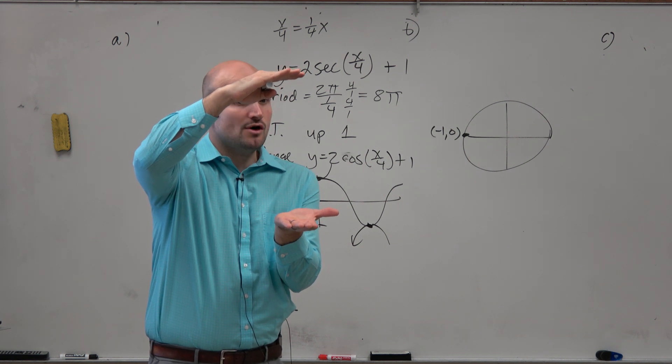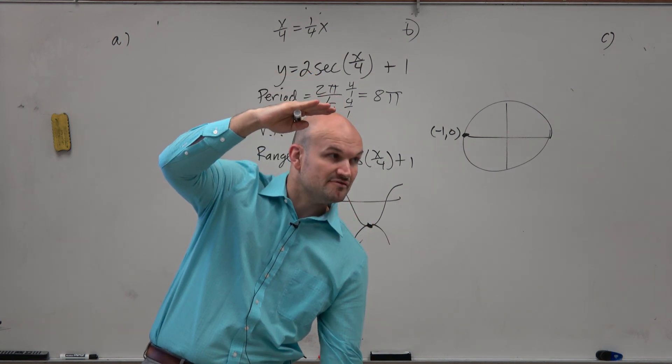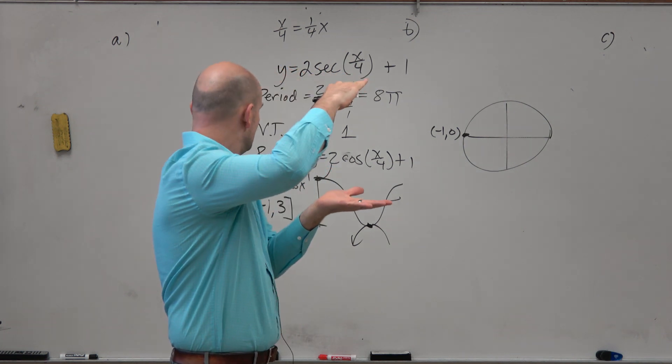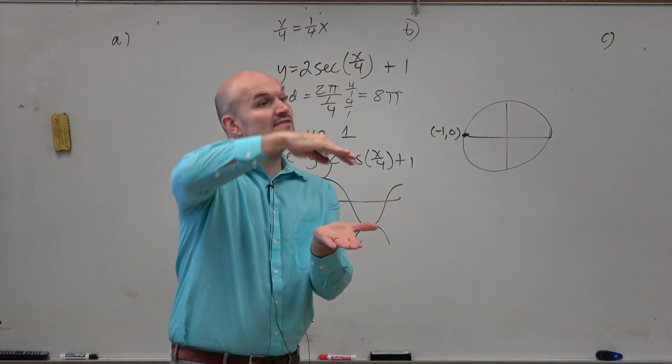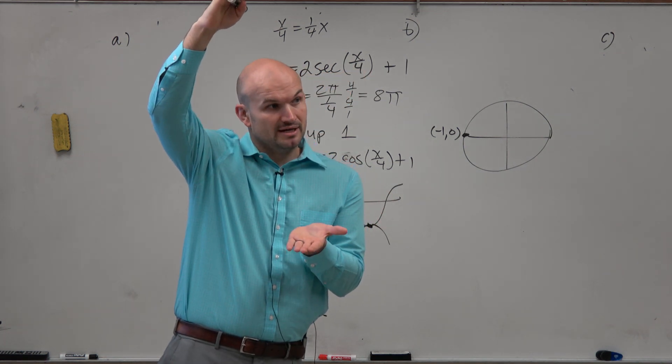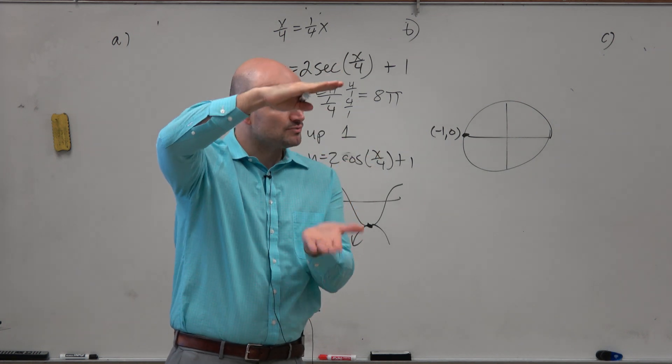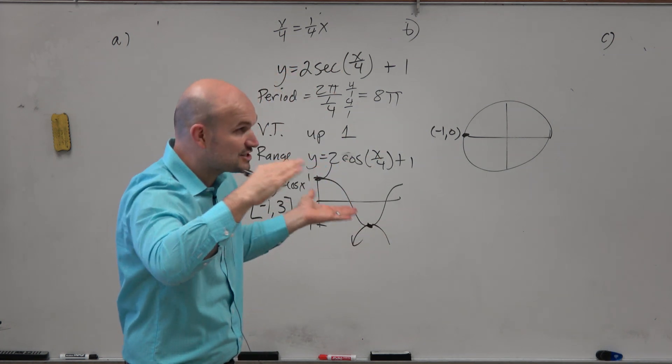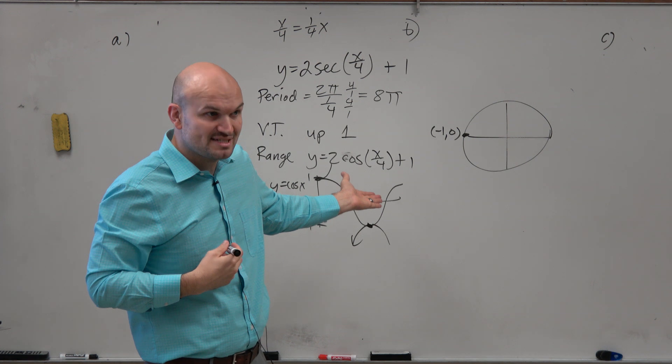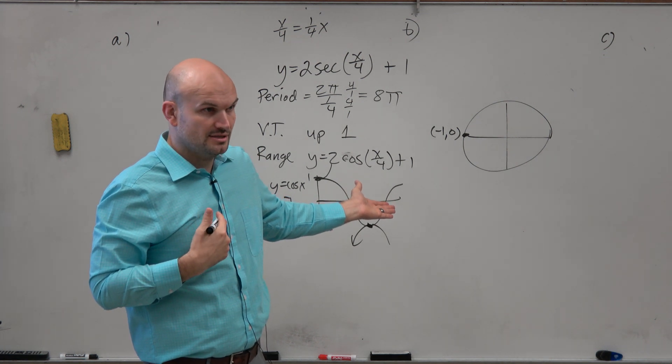my range for cosecant then is from negative infinity to negative 1, and then from 3 all the way up to infinity. Between negative 1 and 3 is where the cosine graph is, right? Which is actually not a part of the graph for secant. You guys agree? See that?